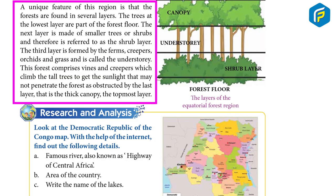A unique feature of this region is that the forests are found in several layers. The trees at the lowest layer are part of the forest floor. The next layer is made of smaller trees or shrubs and is referred to as the shrub layer. The third layer is formed by ferns, creepers, orchids, and grass and is called the understory. This forest comprises vines and creepers which climb the tall trees to get sunlight that may not penetrate the forest, as obstructed by the topmost layer — the thick canopy.